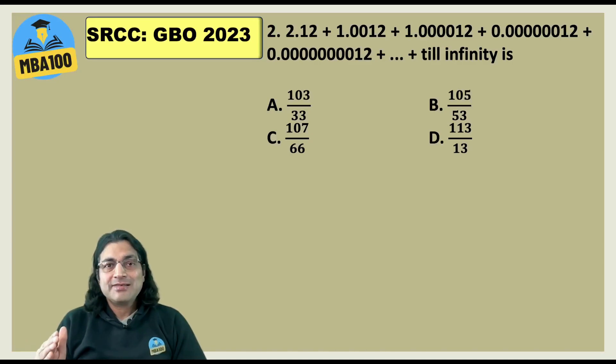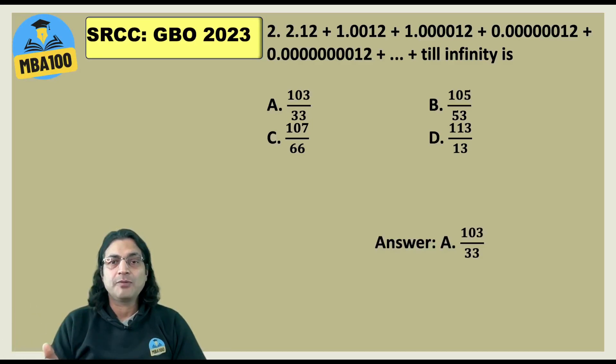Here interestingly you could get the answer by just observing the question carefully. Look at the first two terms. These two terms together give you something more than 3. Look at the options. B and C cannot be the answers. B is less than 2, so is C. What about D? D is very big. So the only possible option is A.